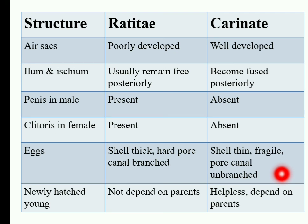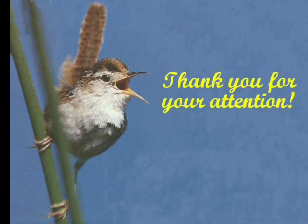Next character is newly hatched young. In Ratites birds, the young are precocial, meaning after hatching they are not dependent on their parents; they can run immediately. In Carinates birds, the young are altricial, meaning they are dependent on their parents after hatching.